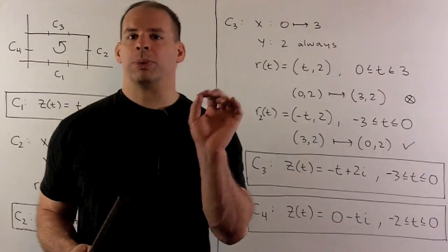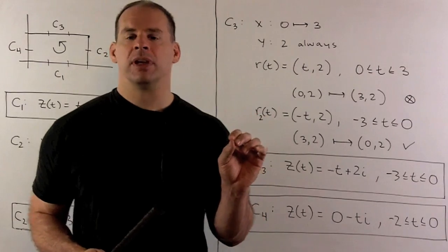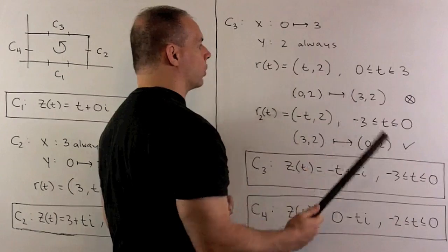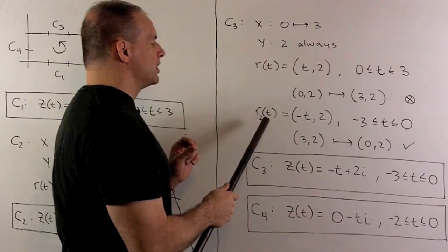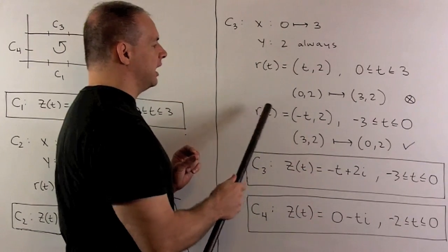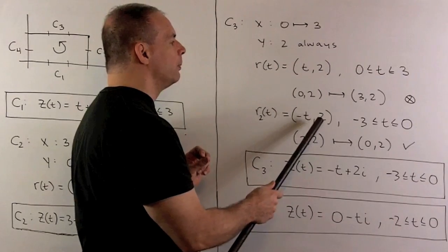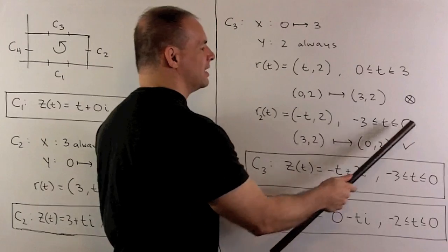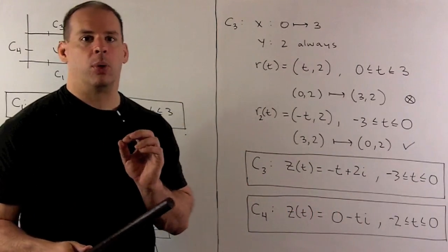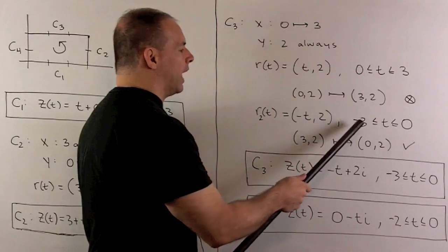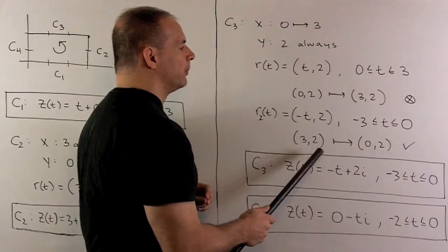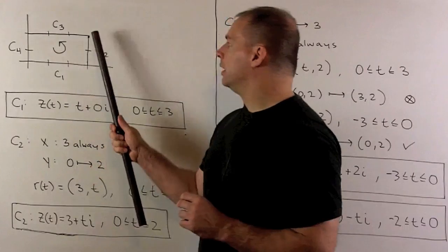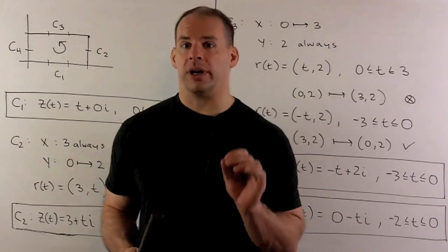So the recipe says, replace t with minus t. And then put minus signs on the endpoints and reverse the order. So the change is going to be, we're going to send r of t to minus t comma 2. Then this interval is just going to reverse with minus signs, giving me minus 3 to 0. Now, if I check the endpoints, what do we have? We'll have 3 comma 2 and I'll have 0, 2. So you'll note now we're going from here to here, which is the correct orientation.